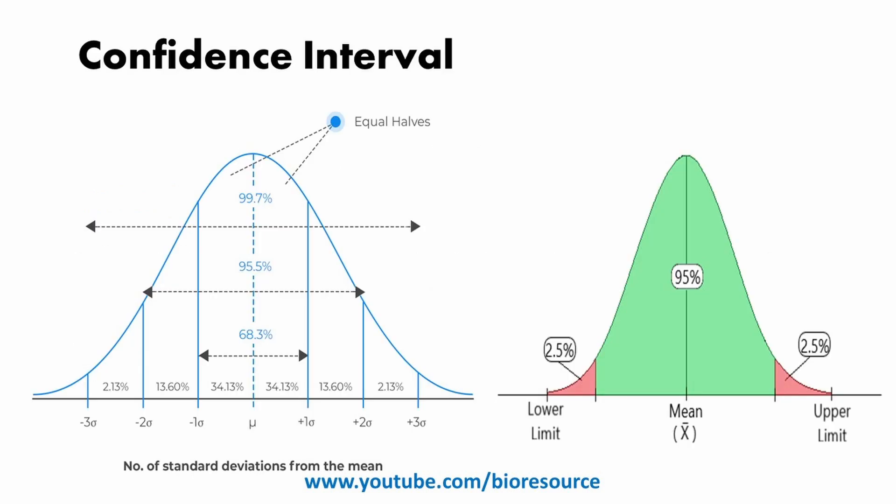To help explain these concepts, let's take a look at this graph. As you can see in the graph on the left, approximately 68% of the data points fall within one standard deviation of the mean, 95% within two standard deviations, and 99% within three standard deviations. This rule is called the empirical rule, also known as the 68-95-99.7 rule, which is a guideline for how data is distributed in a normal distribution.